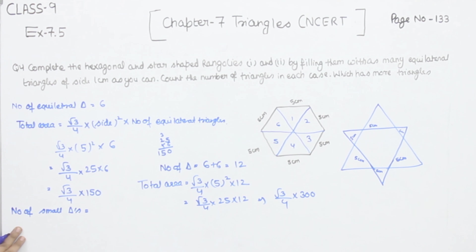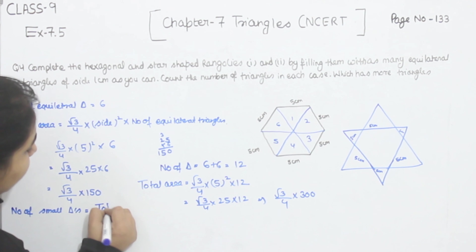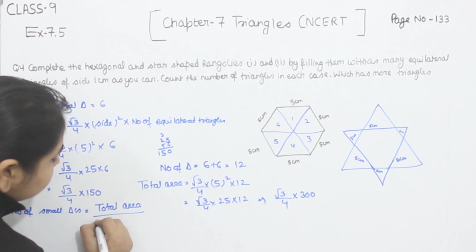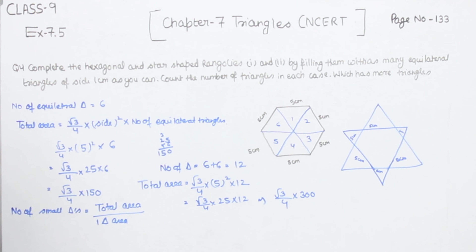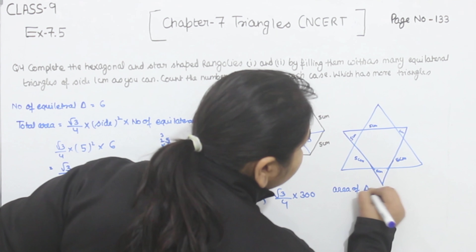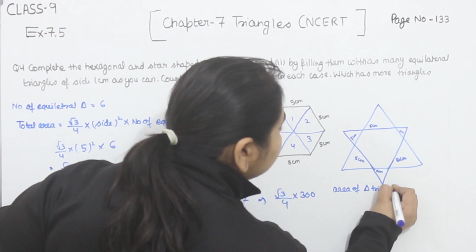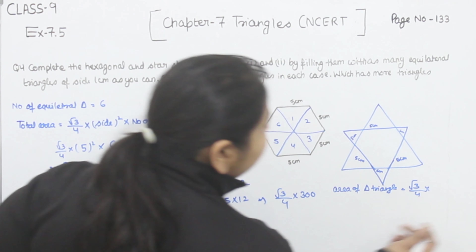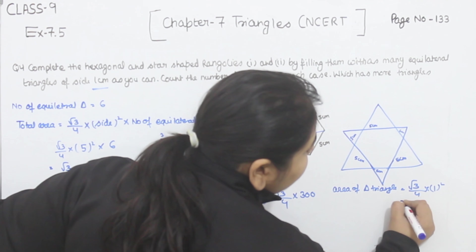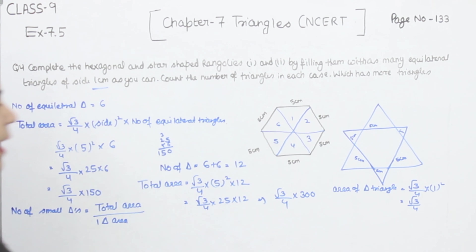The number of small triangles equals total area divided by the area of one triangle. First we find the area of one equilateral triangle: root 3 by 4 × side squared. The side is 1 centimeter, so the area of one small equilateral triangle is root 3 by 4.